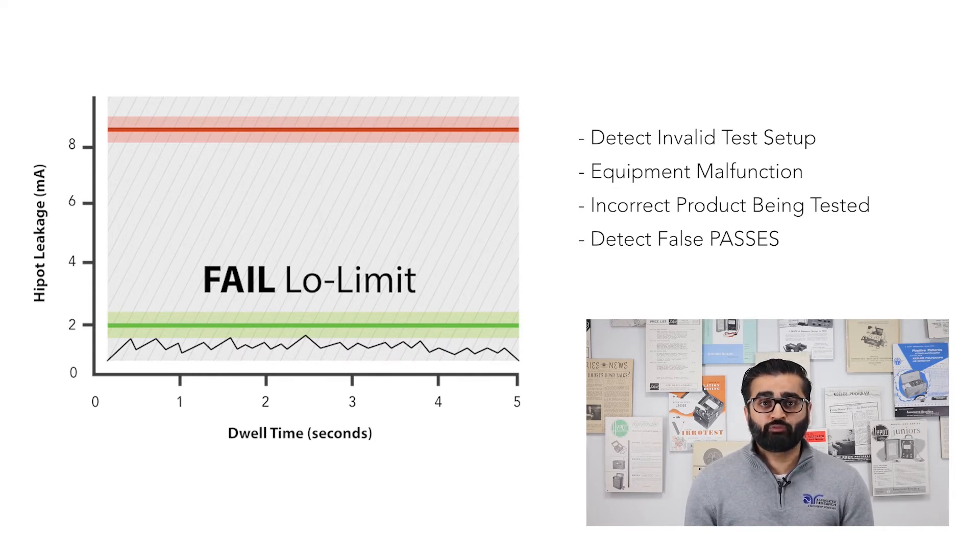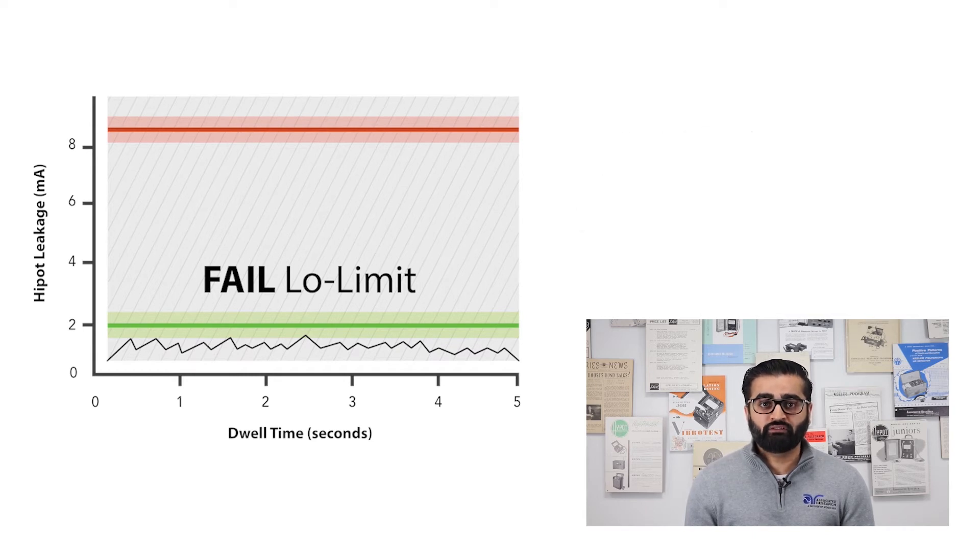Setting the low limit indicates that you expect a certain amount of leakage current for a device on the test. At the minimum, the leakage current should exceed this low limit value in order to be considered a valid test.